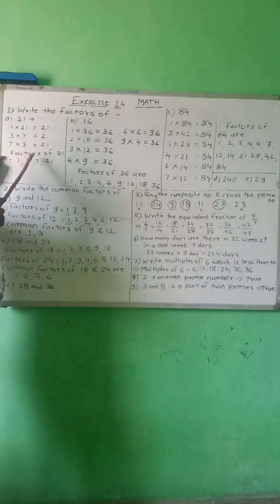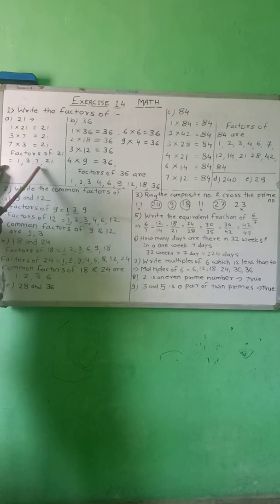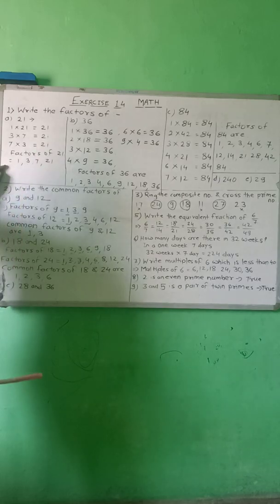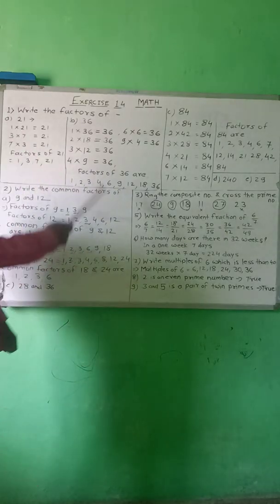Therefore, the factors of 21 are 1, 3, 7, and 21. The next example: 36.